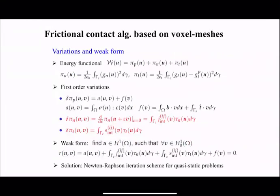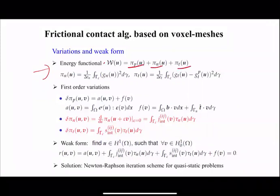Once we define the gap function, the rest of the problem is straightforward. We sample a very common contact problem with the energy function for normal and tangential contact plus the penalty. This energy is added into the classical boundary value problem to get the first variation, yielding the weak form, just like a displacement-based finite element with an additional term to keep track of the contact.